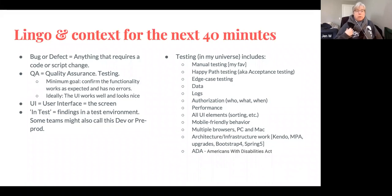Whether it's a requirements change, something that the BA missed, something that the developer missed, something that another developer's code accidentally broke, who knows why, but a bug is a bug. QA is quality assurance. It's testing. My kind of loose definition is the goal of QA is to make sure it works and it doesn't error. Ideally, it works beautifully. It looks nice. The data is gorgeous. The logs are verbose and helpful.